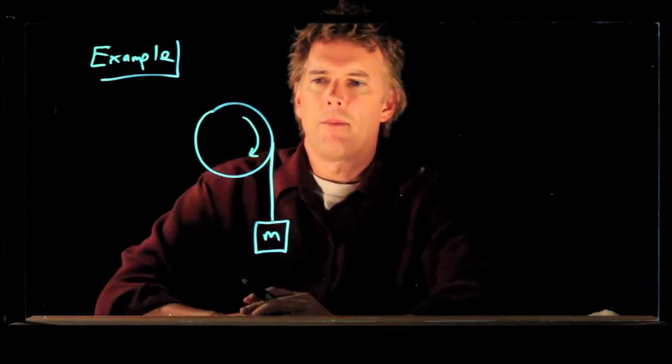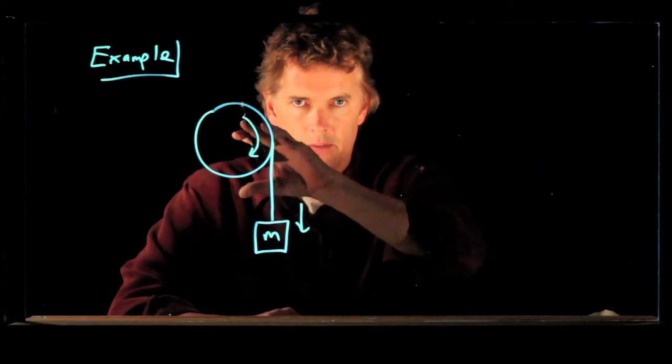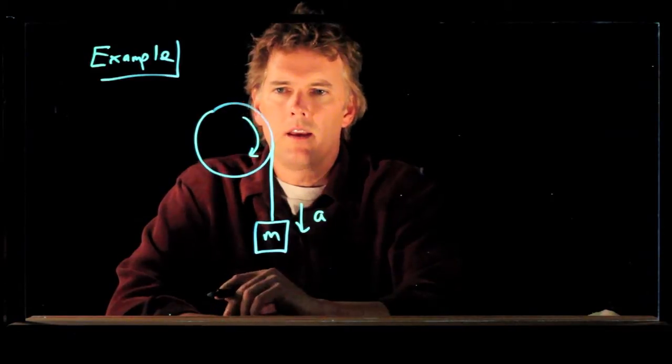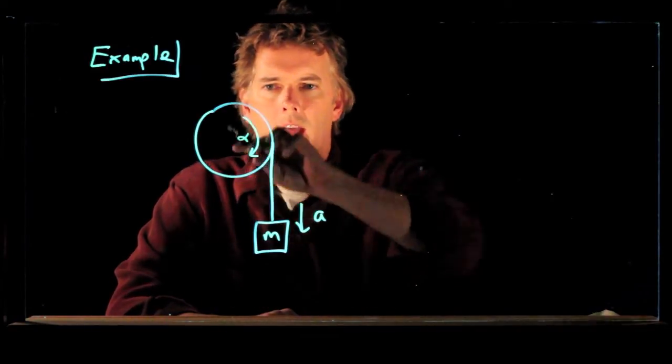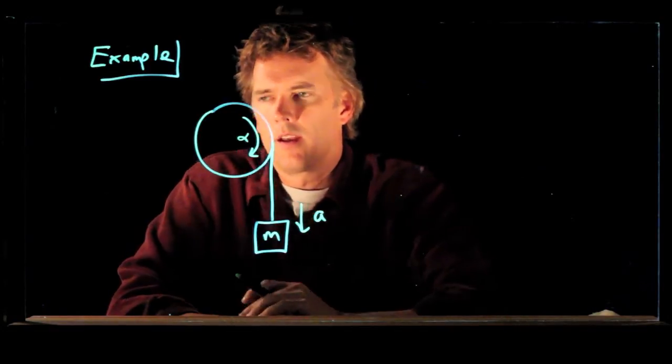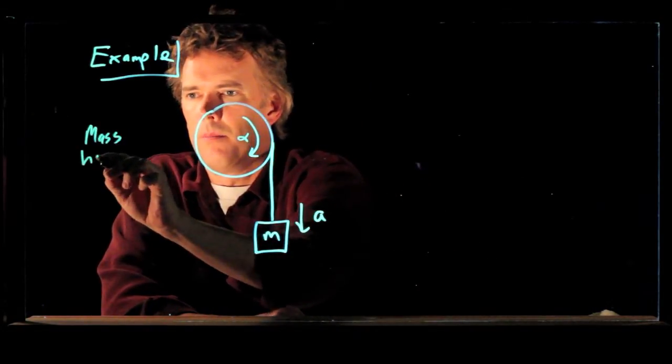Obviously, as the mass drops, the disc will rotate. And if this is acceleration A, then this thing is angularly accelerating at alpha. So this is the mass hanging from a pulley.